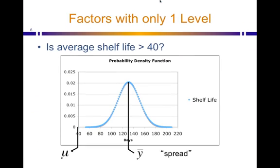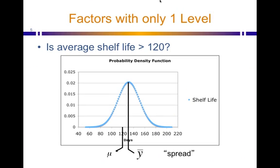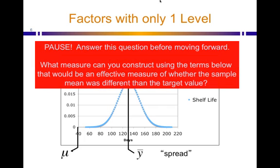To help you with that, let's consider this. What if we were just trying to say, is the average shelf life greater than 40 days? I think everybody would agree that it's much more likely for the data that we have that the average shelf life is greater than 40 days than it is to say that it's greater than 120 days. We'd be much more confident saying it's greater than 40 days.